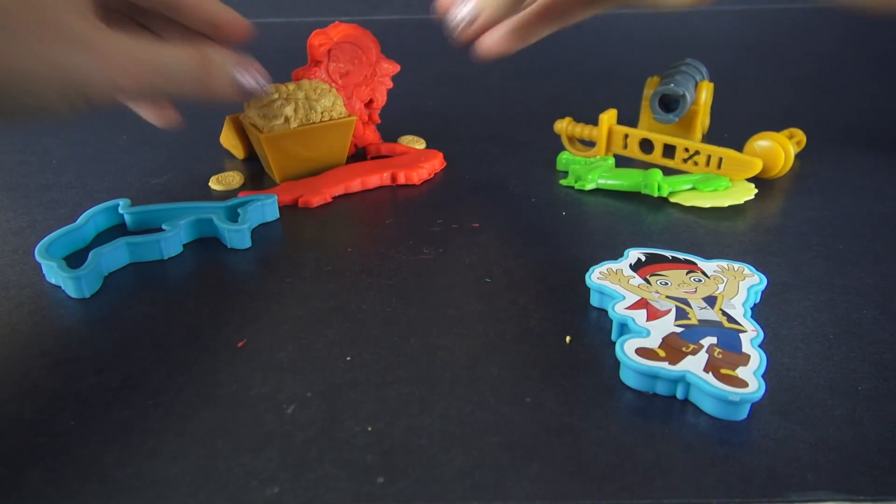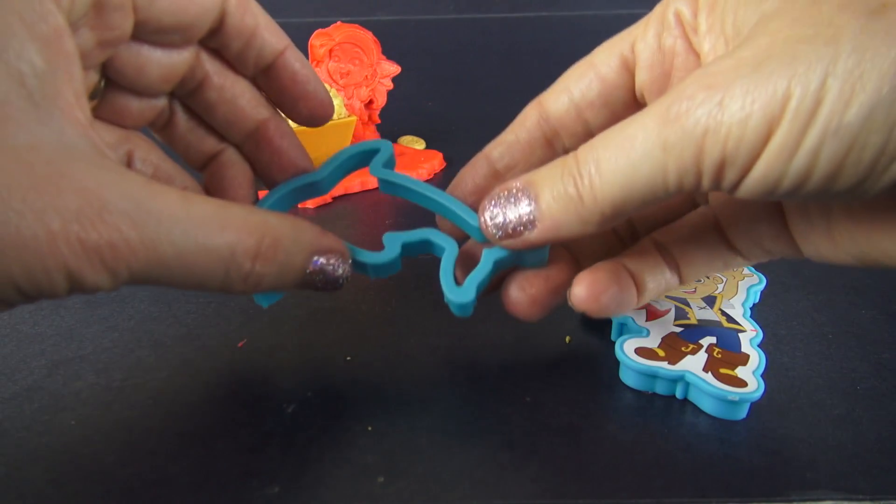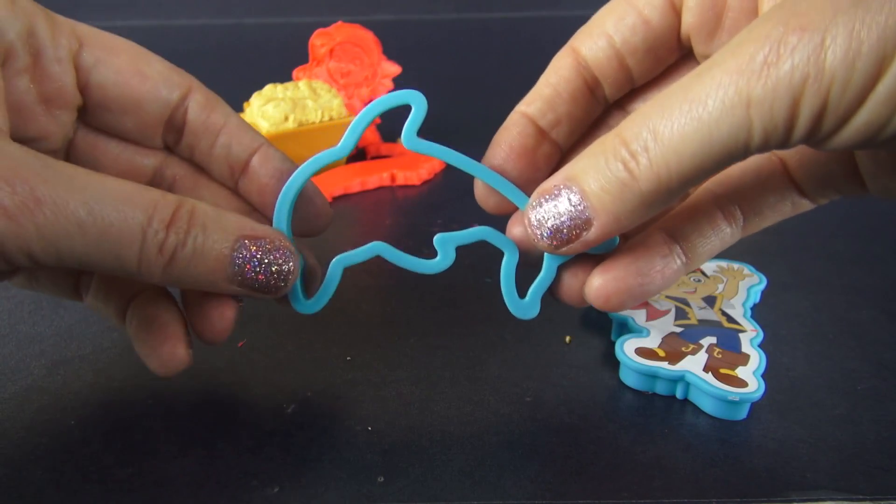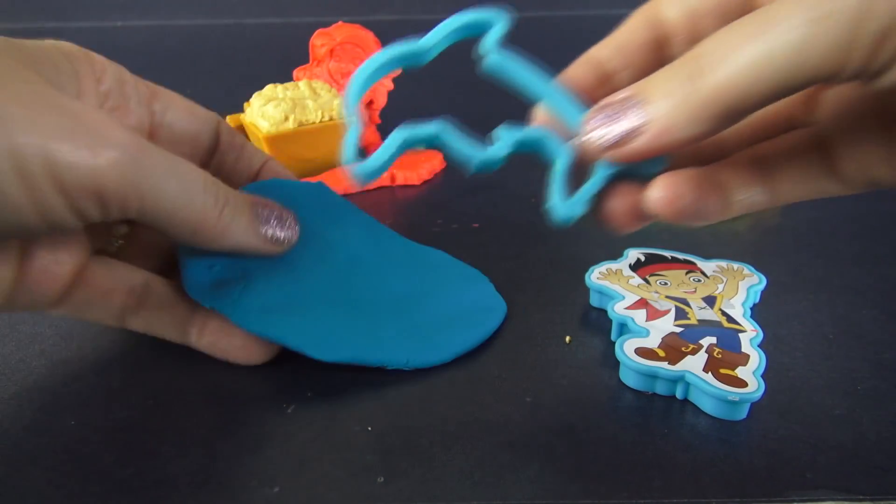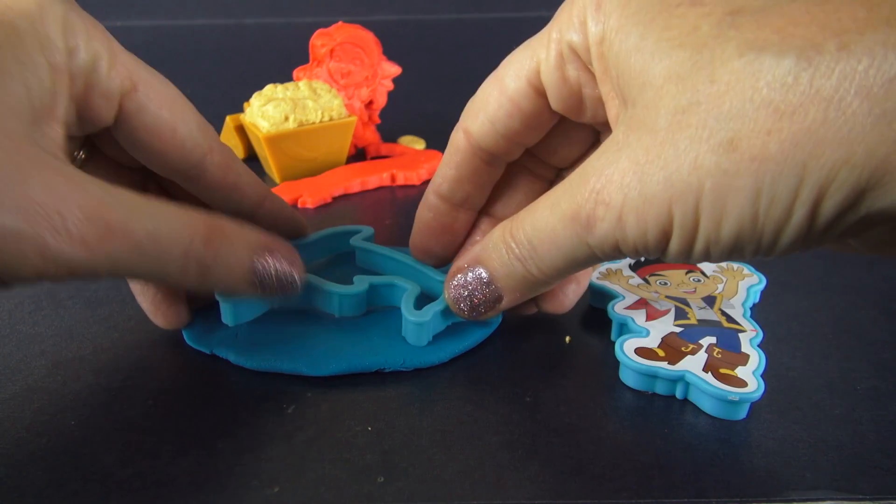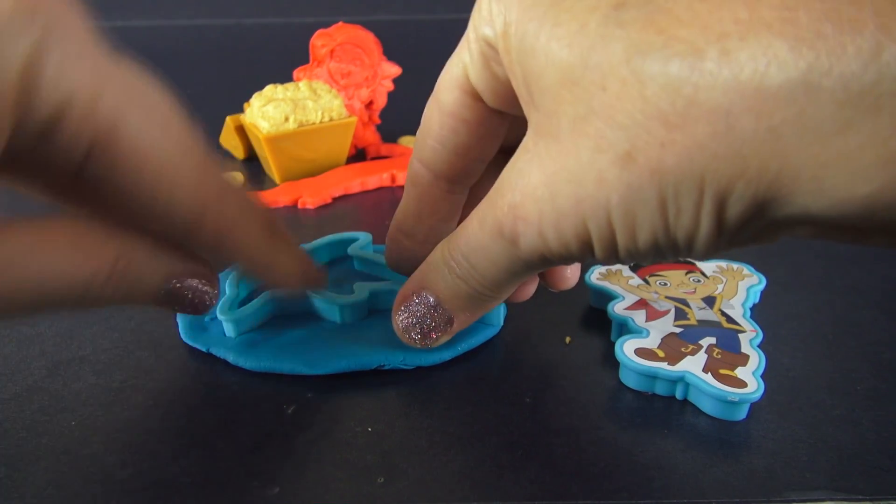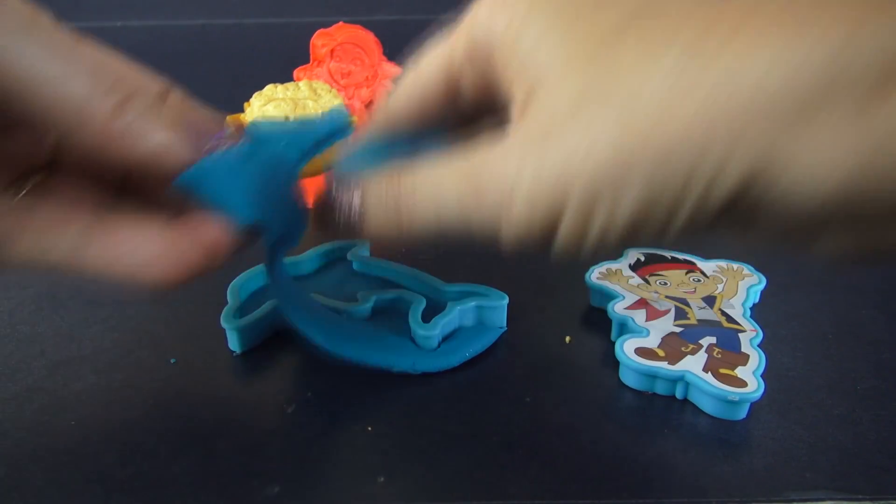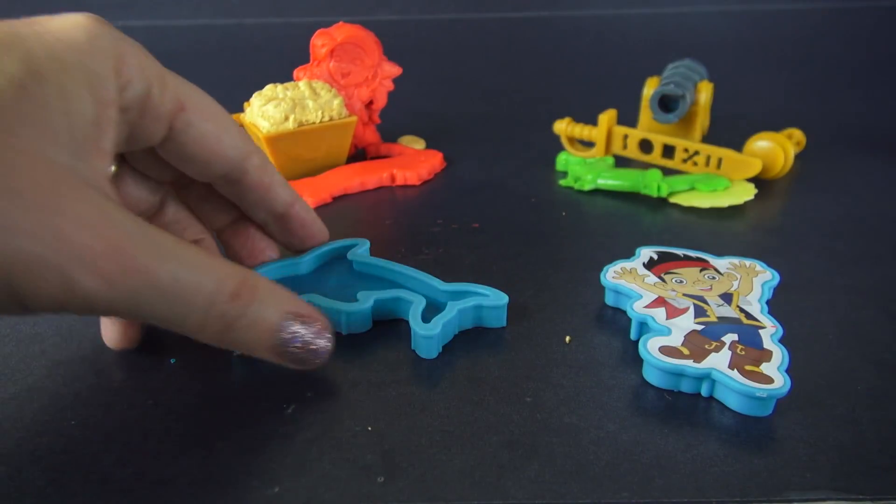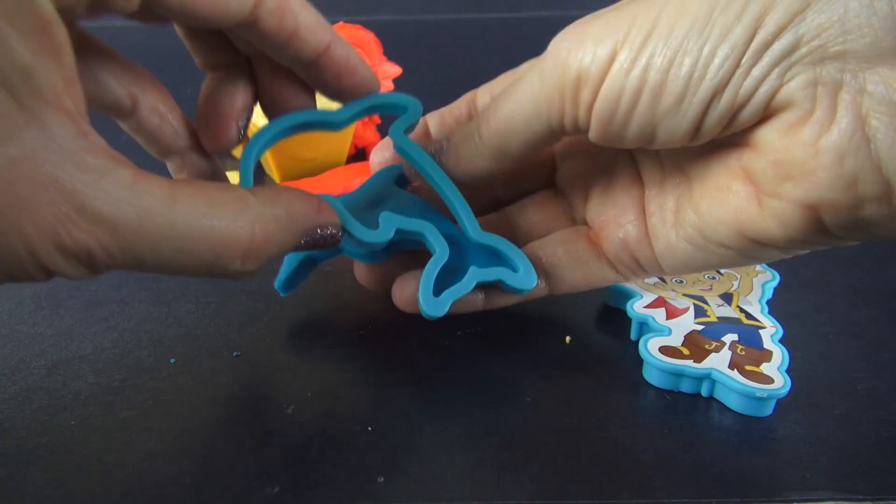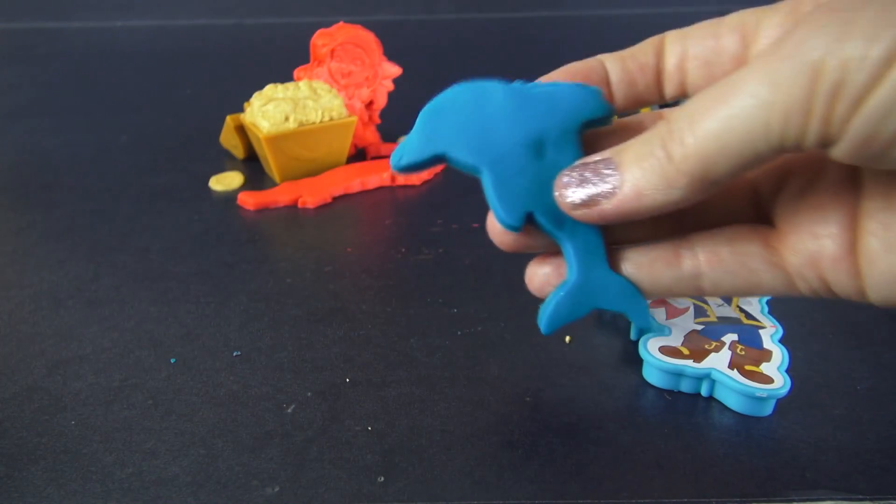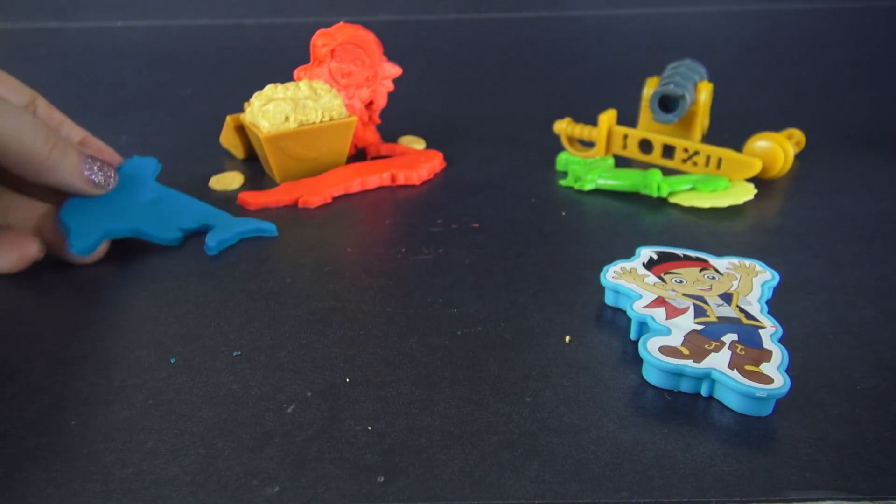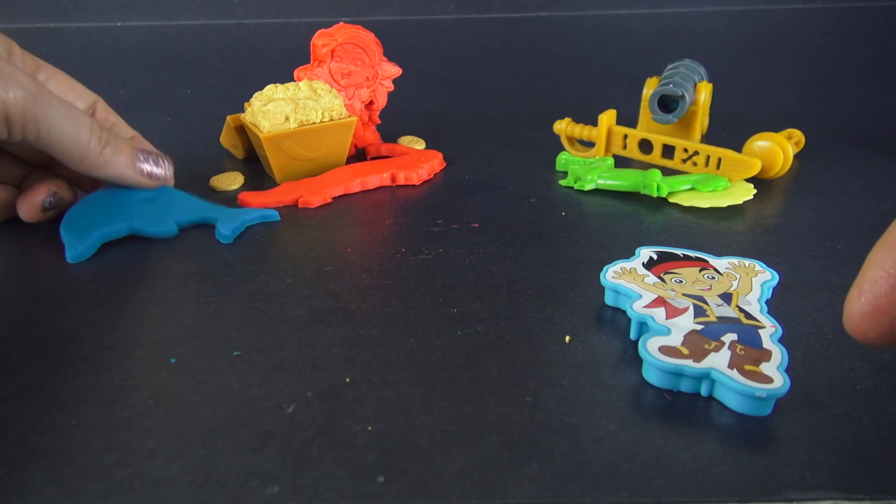But you can never have too much protection for treasure. So how about if we make this dolphin mold and ask this dolphin to protect in the water and let us know if anyone's coming to get the treasure. I think that's a great idea. Okay little dolphin, can you swim off and be over here and help us? I think so. There we go.